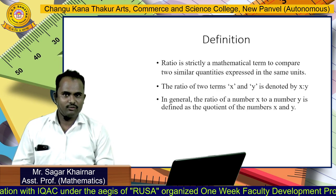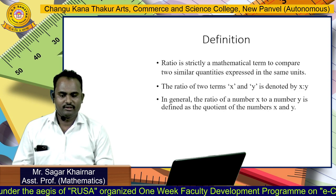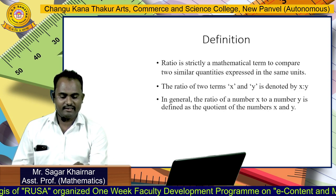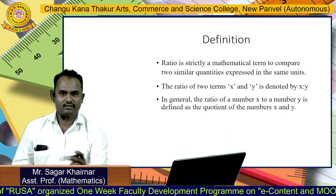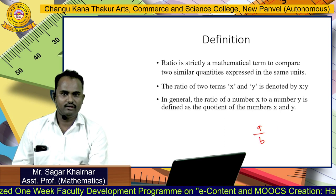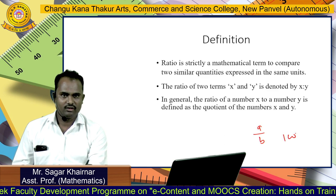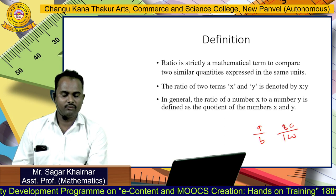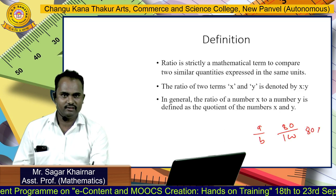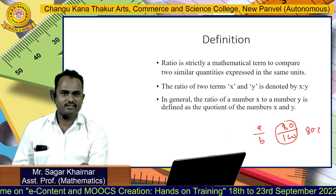Today we are going to study the concept of ratio and proportion. Basically, the ratio can be written as A by B. For example, suppose we have percentage 100, so we can write down 80 divided by 100, that is nothing but 80 percent. This is called the ratio.